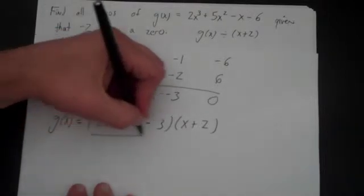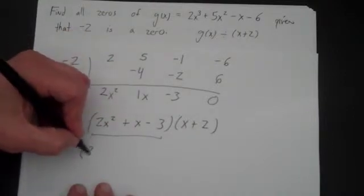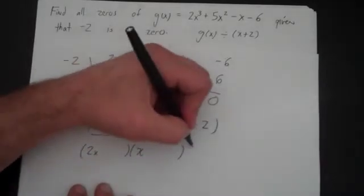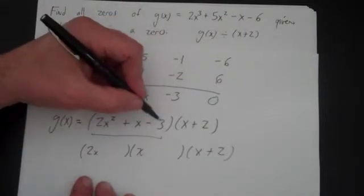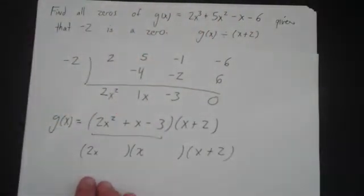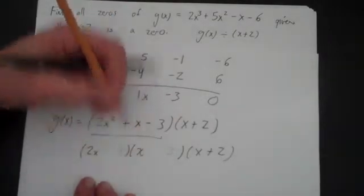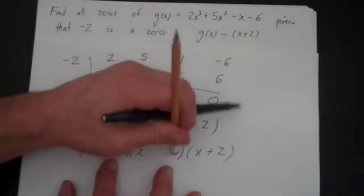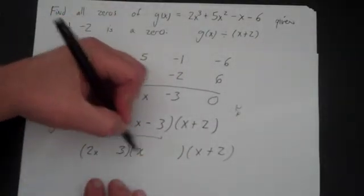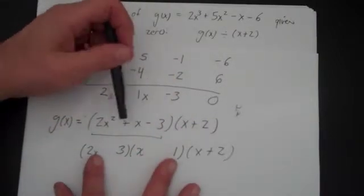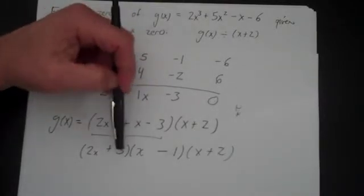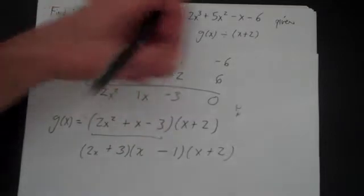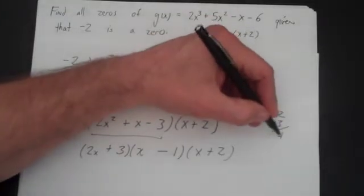And now I'm going to factor this trinomial. I might use a guess and check method, though I usually use factoring by grouping. This is a plus and a minus, so you have 1 positive and 1 negative. I need 3 and 1. If I try a 3 here and a 1 there — that would be 3 and 2, that would work. I need a positive 1, so this is positive and this is negative. Let me check: 2x times x is 2x², 3 times negative 1 is minus 3. Then 2 times minus 1 is minus 2 and positive 3: minus 2 plus 3 is positive 1. I did it right.